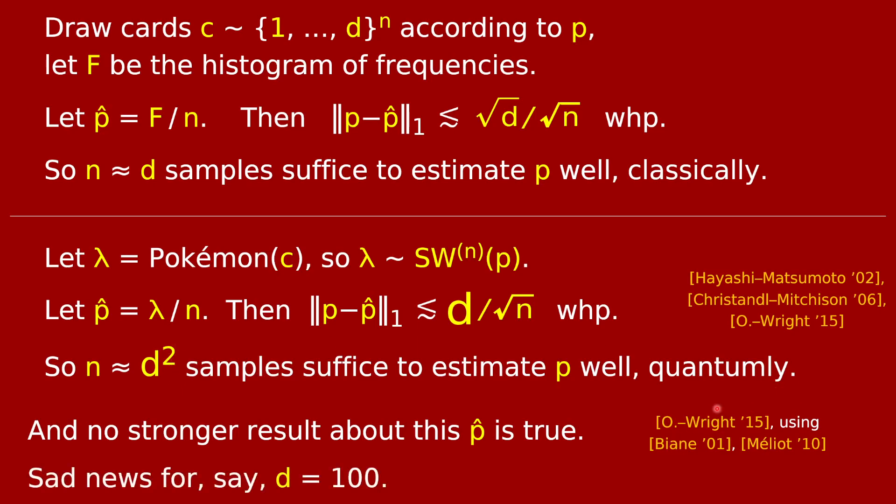Moreover, this is not just some poor analysis. It was shown in 2015, building on some works of Biane and Méliot, that this is the strongest statement that's true about this estimator p hat. It really does need this method of taking the Young Diagram and dividing the row lengths by n - it really does require d squared samples to do well. And that's really a drag. If you've got a quantum experiment and the dimension is 100, there's a big difference between around 100 samples versus 10,000 samples. I think this is funny because it shows there's quite a noticeable difference between the classical situation where f is the histogram of frequencies and the quantum situation where lambda is the result of the RSK process. Yet the two objects have the exact same central limit theorem, so it almost seems contradictory. But it just really goes to show that a central limit theorem, although it looks very precise, does not give you as much information as you really need to understand a statistics problem.